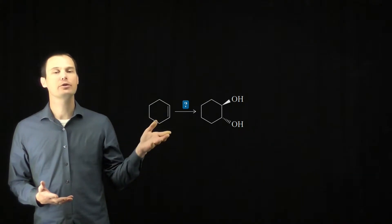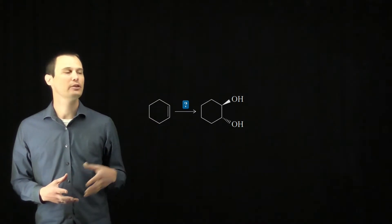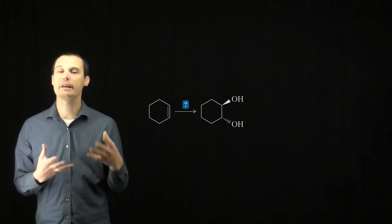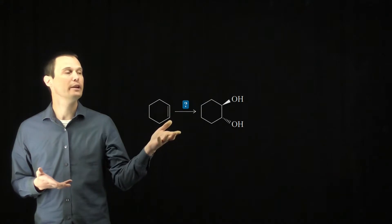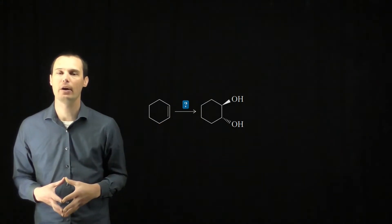This question tells us that the concerted nature of the osmium tetroxide reaction is what causes the oxygens to be on the same face of the product, and it wants us to speculate how we can change the reagents in order to get the trans-diol product.